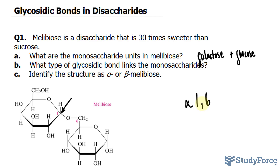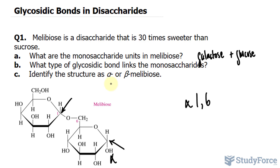Finally, in question C, identify the structure as alpha or beta Molybios. For that, we look at the anomeric carbon that's free. If it's pointing downwards it's alpha, and if it points upwards it's beta. So in our case here, we're dealing with alpha Molybios, not beta.